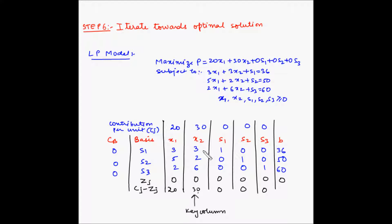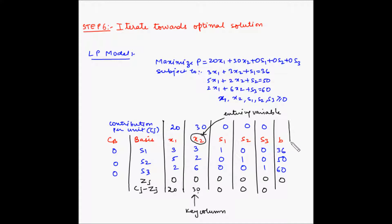Next we need to find the departing variable, or the variable which will be replaced by X2. This is our entering variable. This variable has to replace one of the three current basic variables, so we need to find out which one needs to be replaced. In order to do that, we need to calculate the value of another column which is theta.